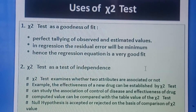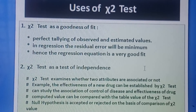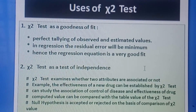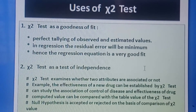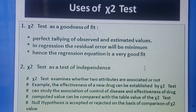The second main use of chi-square test is as a test of independence. The chi-square test examines whether two attributes are associated or not. For example, the effectiveness of a particular drug in treatment of a disease can be established by chi-square test. The computed value is compared with the table value, and the null hypothesis is accepted or rejected on the basis of that comparison.